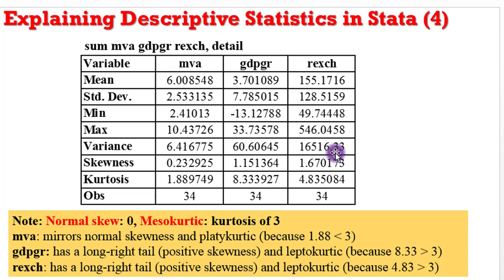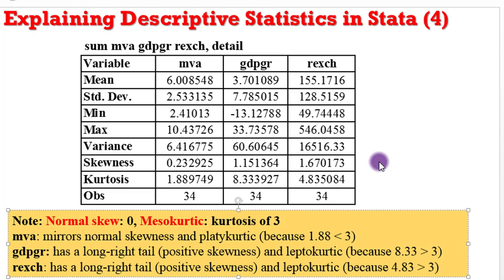For real exchange rate, the skewness value is 1.6 — it takes the same explanation as GDP growth rate: it will have a long right tail indicating positive skewness and is also clearly leptokurtic, because the kurtosis value of 4.83 is higher than 3, which is the value for a normally distributed curve. In summary, running descriptive statistics on MVA, GDP growth rates, and real exchange rates gives the researcher an idea of the data they are working with, so it is always important to run summary statistics before beginning any analysis.